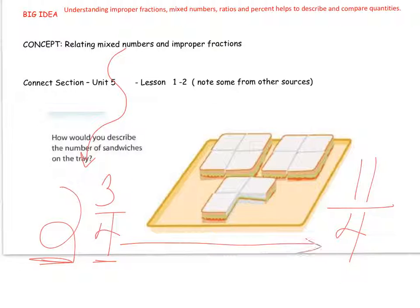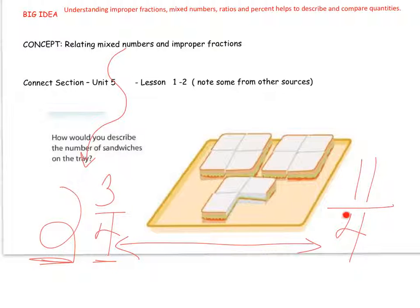That bottom number between a mixed number and an improper fraction is always the same. Remember, that bottom number is how much one section or one item is divided into. So it's divided into four pieces. Here, it would also be divided into four pieces — that missing piece included. So in a mixed number and an improper fraction, that bottom number is always the same. It is always how much one is divided into.